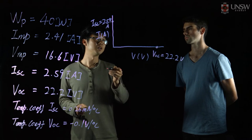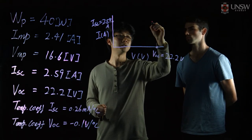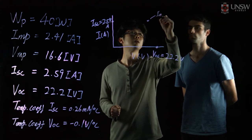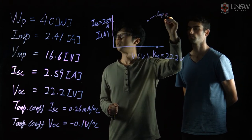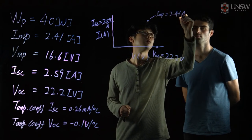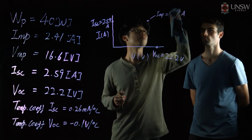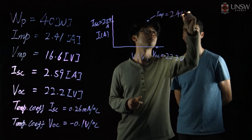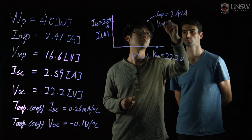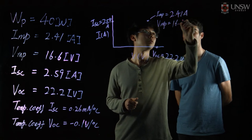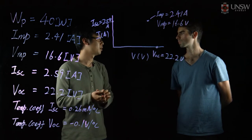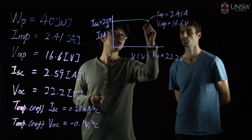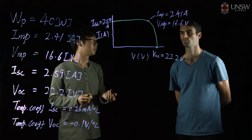On the IV curve, that maximum power point is roughly around this location. All we do now is join these three dots together, and that gives the IV curve of this particular module.